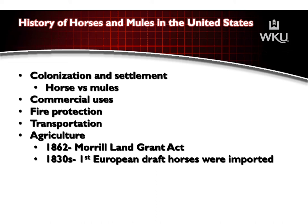In 1862, Congress passed the Morrill Land Grant Act, which led to the establishment of state agricultural colleges — typically one per state, with Kentucky's land grant college being the University of Kentucky. The first veterinary college also opened at Cornell University in 1868. As a result, farmers became more educated and improvements in the care, feeding, and breeding of horses quickly followed. The first European draft horses were imported to the United States in the late 1830s. Farm labor became scarce due to westward migration and casualties from the Civil War, creating an even greater demand for new farm equipment and the draft horses to power them.